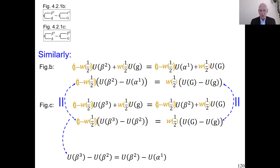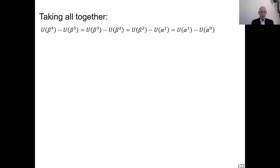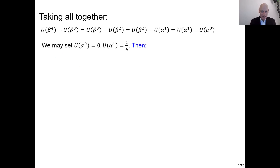For beta 3, if we write the correct rank-dependent utility formulas, then beta 3 minus beta 2 in utility units is equal to beta 2 minus alpha 1 in utility units — that equality also continues to hold. And for beta 4, the same story. That equality of utility differences holds. So we can still summarize, taking it all together: the same as we had with expected utility. Beta 4, 3, 2, and alpha 1, alpha 0 are still equal in utility units. That was also the case with the alphas.